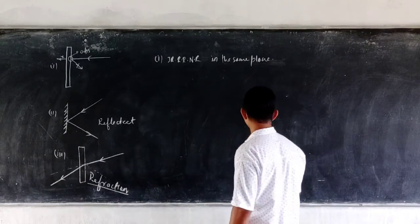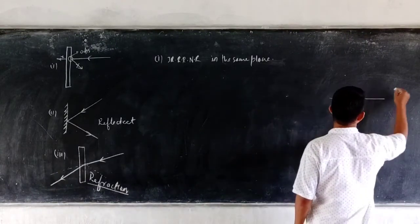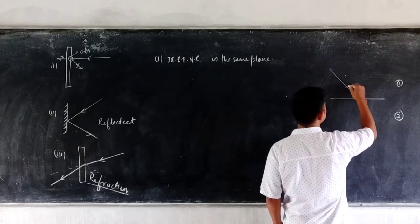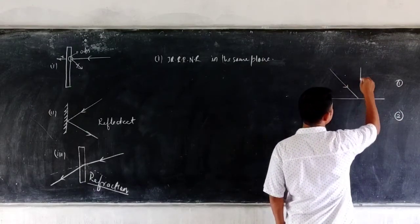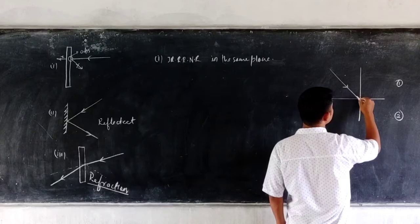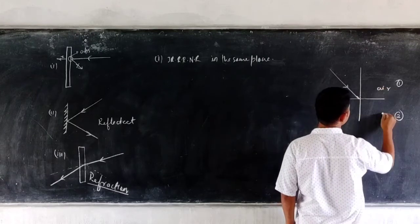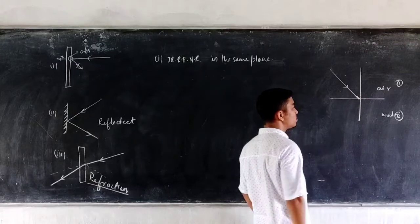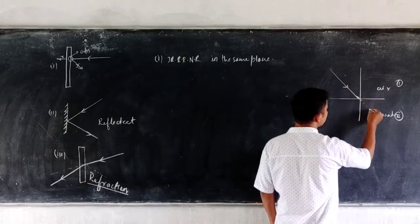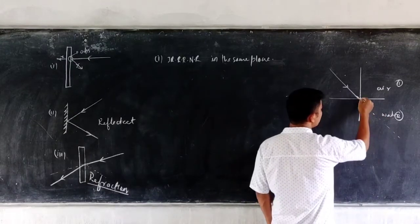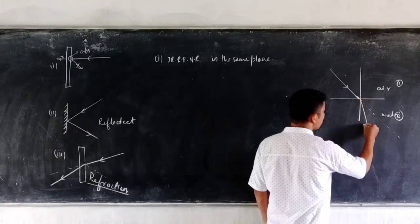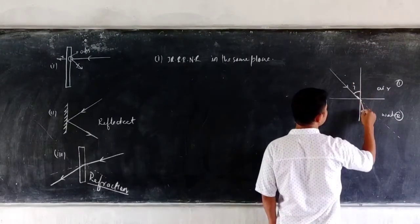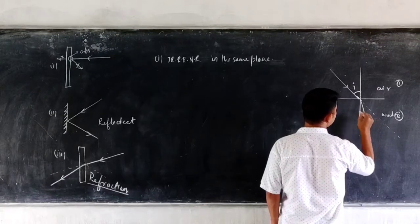Now the second law is quite different. Suppose I consider two media, number one and number two. This is the incident ray and this is the normal. If this is air and this is water, the ray of light will pass into the water. But when it passes into the water, instead of going in a straight line, it will bend towards the normal. This angle is known as the angle of incidence I, and this one is known as the angle of refraction R.